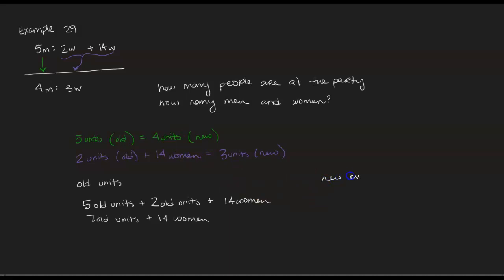So in our new units, we have four new units of men plus three units of women for a total of seven new units. And these have to be equal. So seven of the old units plus 14 women has to be equal to the seven new units. But the only thing that's different is what constitutes a unit. So we set this up and we try to solve for the units. So now we have this equation: seven old units plus 14 women is equivalent to seven new units. Notice that everything in here has a factor of seven.